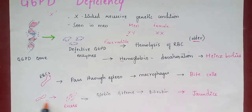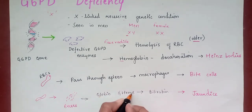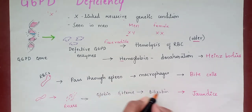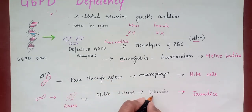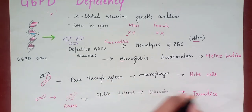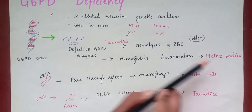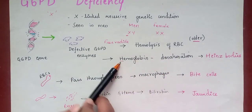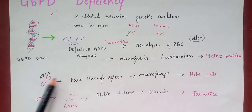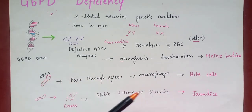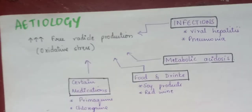When RBCs are destroyed or hemolyzed in excess, it leads to breakdown into globin and heme, forming bilirubin; excessive hemolysis therefore leads to jaundice. To summarize three key findings: Heinz bodies due to hemoglobin denaturation, bite cells due to spleen macrophages, and jaundice due to excessive hemolysis.